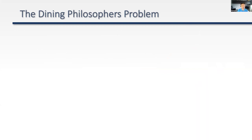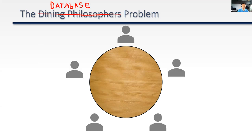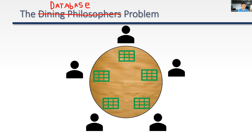This seems like a simple problem, but it's the exact same kind of problem we can have with databases. If we take the dining philosophers problem and call it the database problem, we can build a parallel very quickly. Instead of philosophers, we have users. Instead of forks, they need to acquire locks to access data. The overall constraint is of course money, since databases and the technology are typically not cheap. This leads to very real concurrency conflicts, and isolation levels can help mitigate these issues.